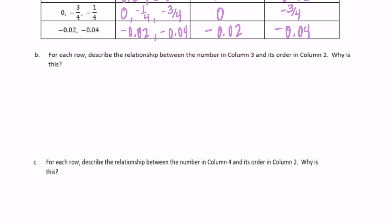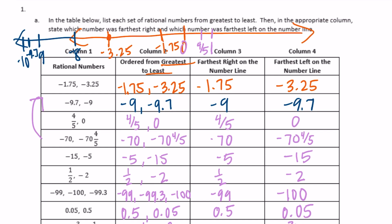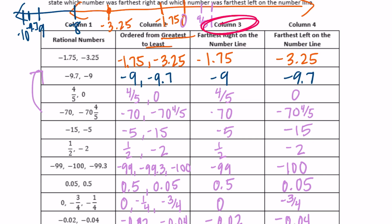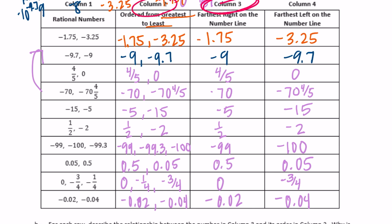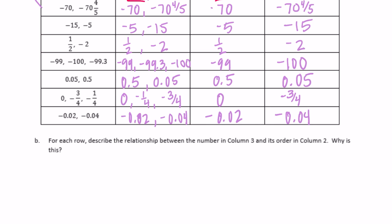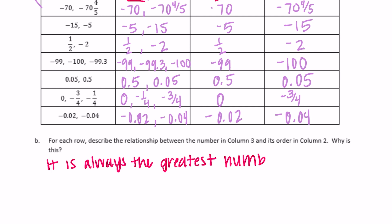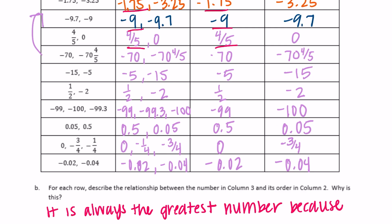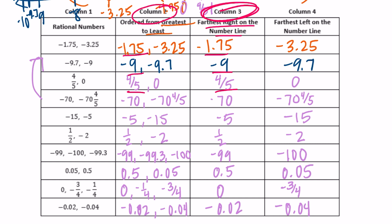For each row, describe the relationship between the number in column 3 and its order in column 2. The number in column 3 is always the first number — notice negative 1 and 75 hundredths, negative 9, 4 fifths — it's always the same as the greatest number. We can say it is always the greatest number, because what it's describing is the number furthest to the right on the number line, and the number furthest to the right is always the greatest.